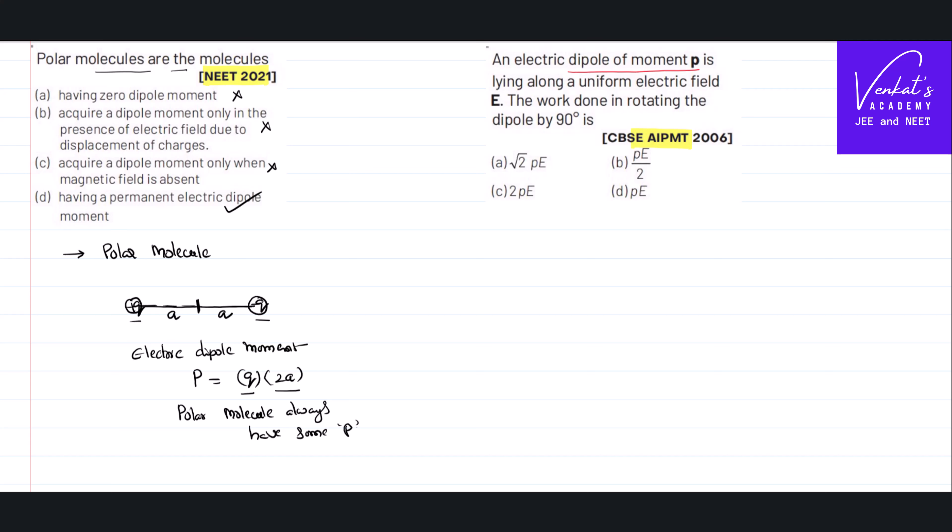An electric dipole of moment p is lying in a uniform electric field E. What is the work done in rotating the dipole? So we know when an electric field is there around a dipole, the work done formula can be written like...